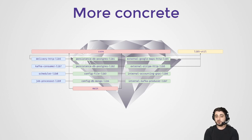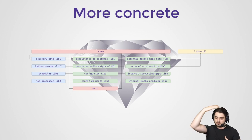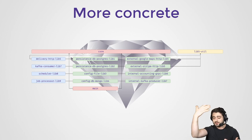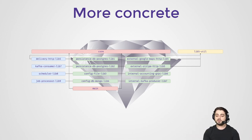Therefore I also prefer not to use the word layers. I prefer to use the word grid. You have something like the first row of the grid and it's kind of the same thing. Core at the top, main at the bottom, everything else is in the middle. Keep it simple.